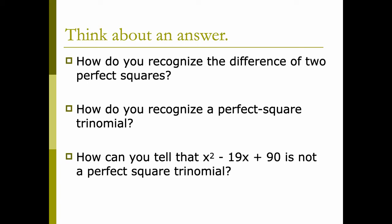How can you tell that x² - 19x + 90 is not a perfect square trinomial? The last term, 90, is not a perfect square.